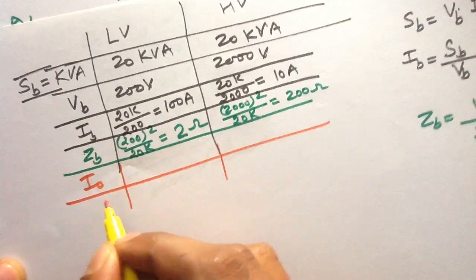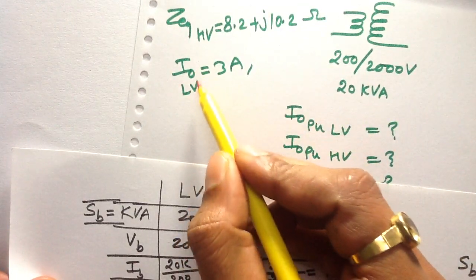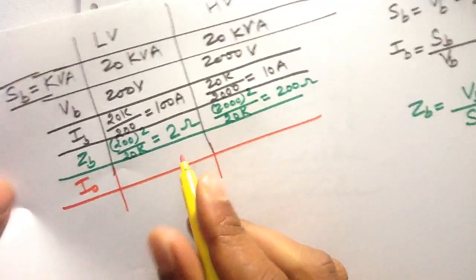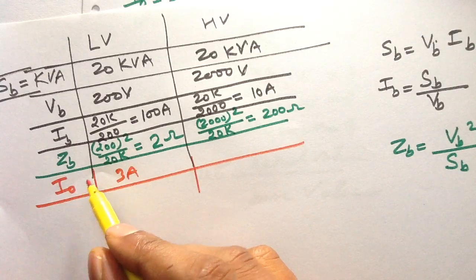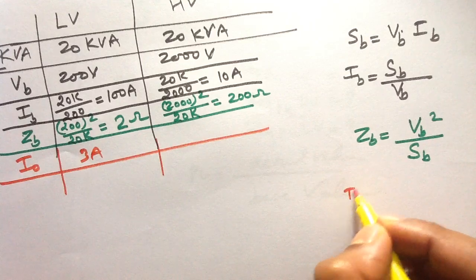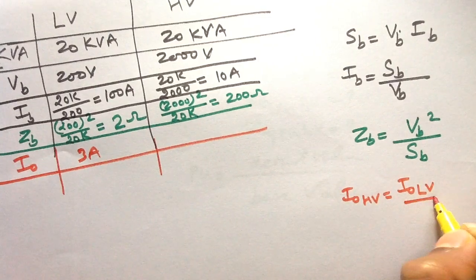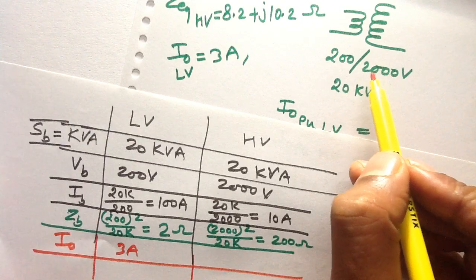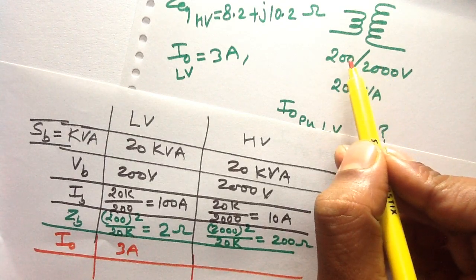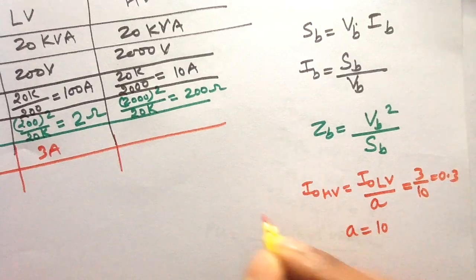The actual value of the exciting current on LV side is 3 Ampere. The exciting current referred to HV side equals the exciting current on LV side divided by the transformation ratio. The transformation ratio equals HV winding voltage divided by LV winding voltage, which is 2000/200 = 10. So 3 divided by 10 equals 0.3 Ampere.